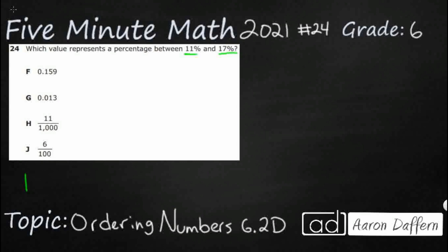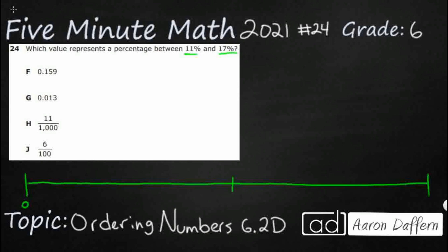What I'm going to do to keep all of these values organized is build a big number line here. I'm going to mark 0, then 0.10 — which is 10% — and then 0.20, which is 20%. Simply because when we are changing from a decimal to a percent, all you do is move the decimal two times to the right.